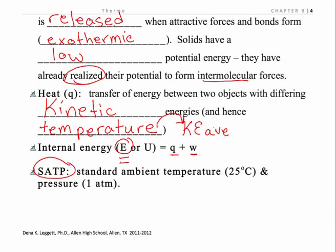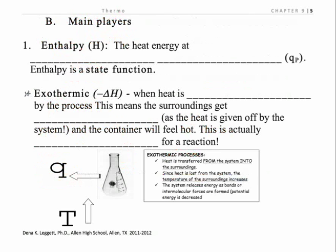I heard this term when I was watching a video out of Canada, and we want to make a clear distinction here: the standard temperature and pressure of thermodynamics is not the same as it is for gas laws. They were very careful to state that it was standard ambient — ambient is roughly room temperature. So instead of zero degrees Celsius, it's 25 degrees Celsius. We are still at one atmosphere, and I will do my best to call it standard ambient temperature and pressure so you don't get confused with STP used in gas laws.